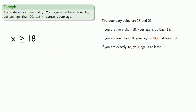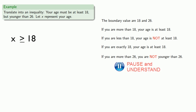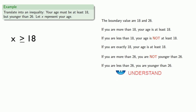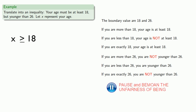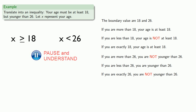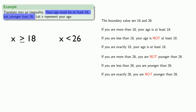For the other inequality, the boundary value is 26 and the requirement is that you're younger than 26. If you are more than 26, you are not younger than 26. If you are less than 26, then you are younger than 26. Don't forget to check the boundaries — if you are exactly 26, then you are not younger than 26. So we want the age to be less than but not equal to 26, giving us x < 26. Since we have to have both inequalities true, this is x ≥ 18 and x < 26.